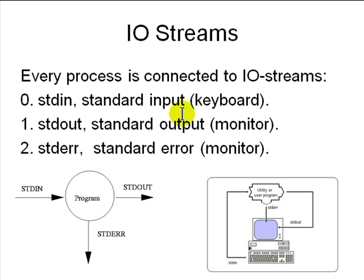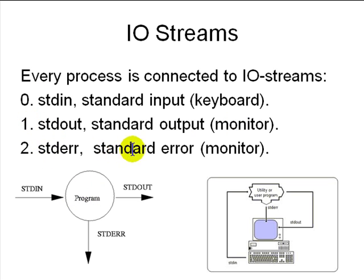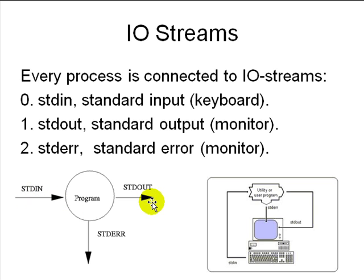Every process is connected to I/O streams. There are three: stream 0 is standard input (incoming text), stream 1 is standard output, and stream 2 is standard error. Errors go on standard error and regular output goes on standard output. Usually standard input is the keyboard or another program, and output goes to your screen or another program.